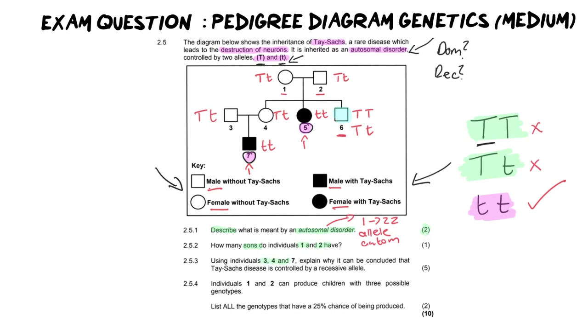Next question. Number three says, using individuals three, four, and seven, explain why it can be concluded that Tay-Sachs disease is controlled by a recessive allele. And what you're going to do there for five marks, which is a lot of marks, is you are going to talk about what the parents are, each for a mark. So let me walk you through how to best break this question down. So for your first mark, you're going to tell me what mom is. And she is capital T, lower T. Then for your second mark, you're going to tell me what dad is. And he is also capital T, lowercase t. Then you're going to tell me what the child is, which in this case is two lowercase t's. Now you're three out of five. You're almost there.